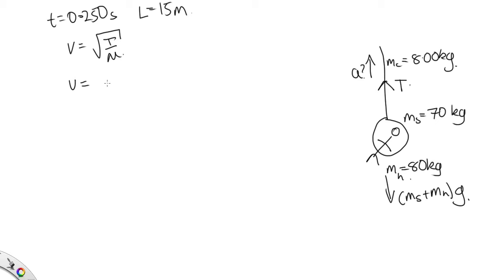The velocity is equal to the distance traveled, which is 15 meters over this time. So that's equal to 60 meters per second, the velocity of the pulse.